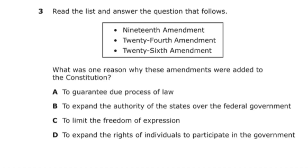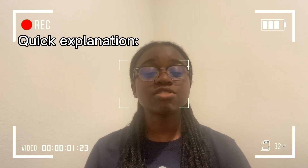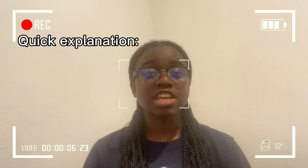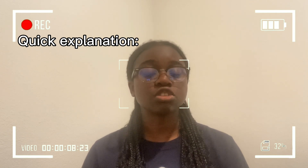For this next question I'm not going to go into too much detail because I already have an amendments video linked. The question reads: given the 19th Amendment, 24th Amendment, and 26th Amendment, what was one reason why these amendments were added to the Constitution? The correct answer is D — to expand the rights of individuals to participate in government. All of these amendments were related to voting rights and equal participation in government, whether in Congress, the House of Representatives, or any government ruling.